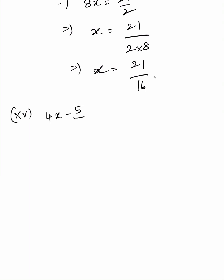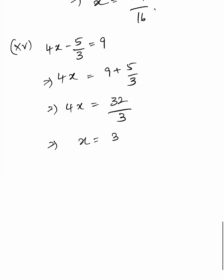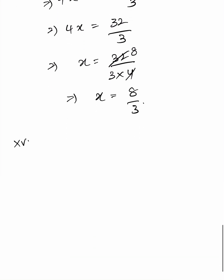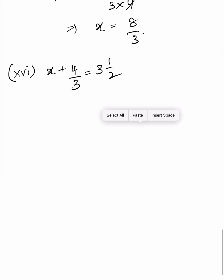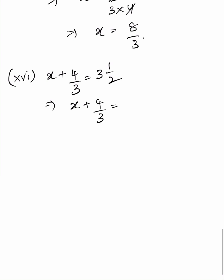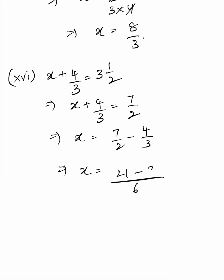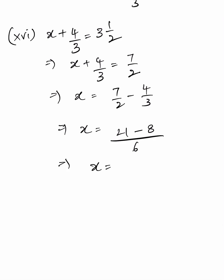Fifteenth: 9x equals 21 by 3, so x equals 21 by 2, giving x equals 22 by 3. Then x equals 22 by 3 into 4, which equals 8 by 3. Sixteenth: x plus 4 by 3 equals 3 and 1 by 2, that is 7 by 2, so x equals 7 by 2 minus 4 by 3, giving x equals 13 by 6.